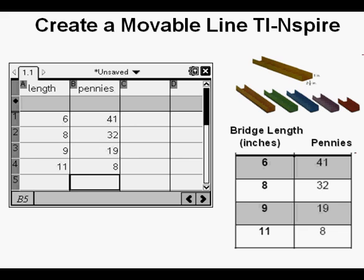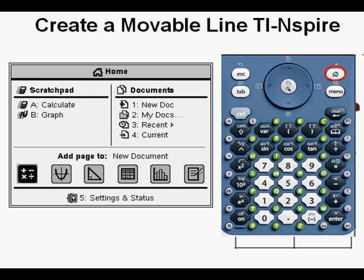From here we'll go to create the scatter plot by going to home in the upper right. Arrow four times to the right to get to the bar graph icon. Press ENTER.